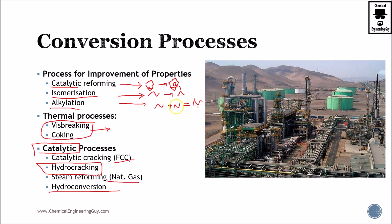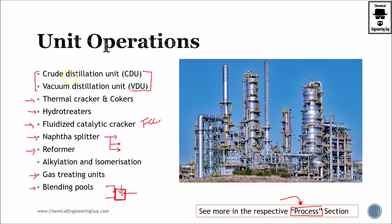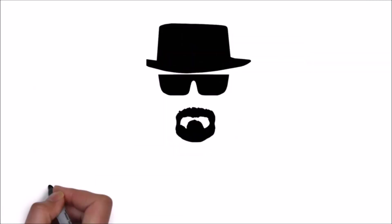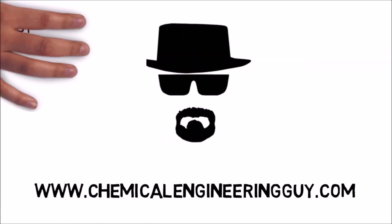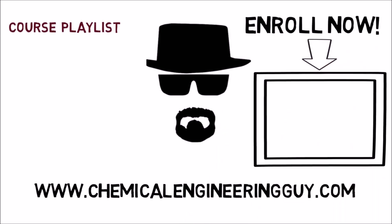So these are the four main processes and the main unit operations that we're going to encounter in a petroleum refinery. We'll see you later. Thank you.